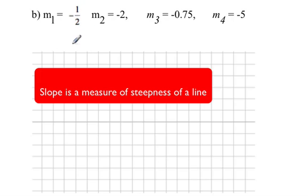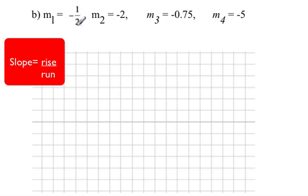Remember that slope is a measure of the steepness of a line. We're going to compare the slopes negative one-half, negative two, negative 0.5, and negative five to see which is the steepest. For negative one-half, it's already in rise over run form. Remember that slope is equal to rise over run, so we're going to express each of these in fraction form.